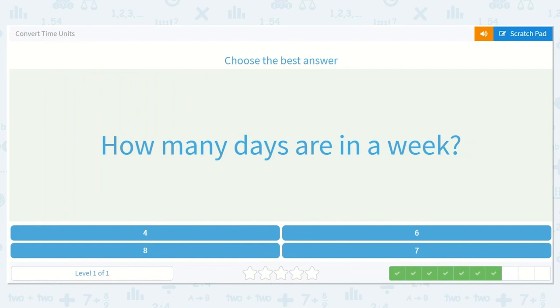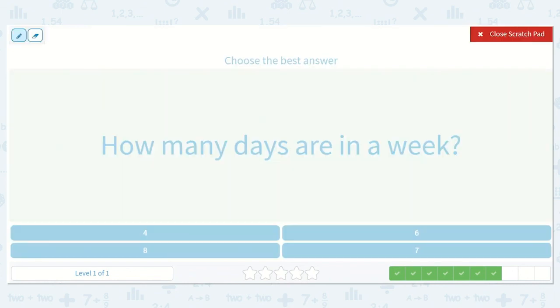How many days are in a week? Well, let's count our days: Monday, Tuesday, Wednesday, Thursday, Friday, Saturday, Sunday. That's one, two, three, four, five, six, seven. Seven days in a week.